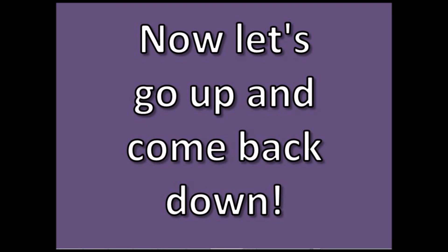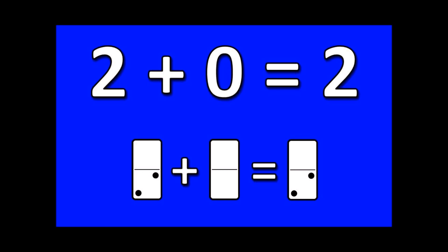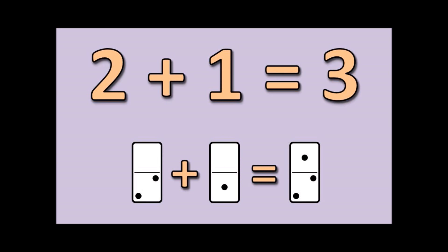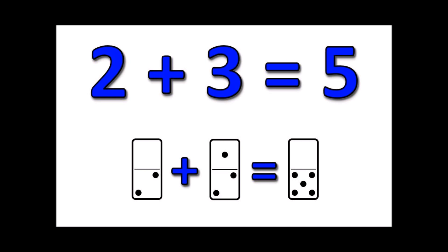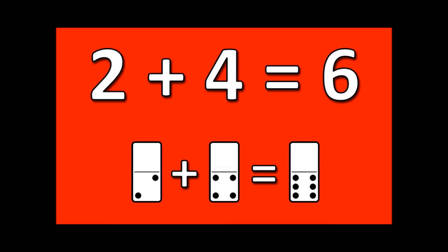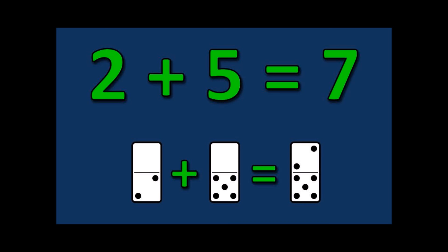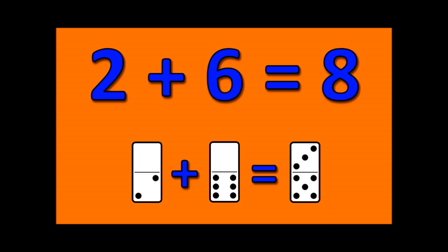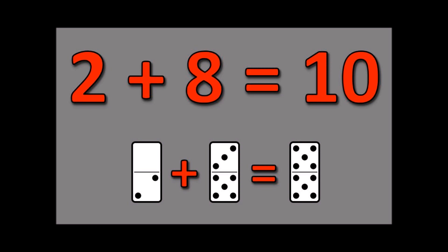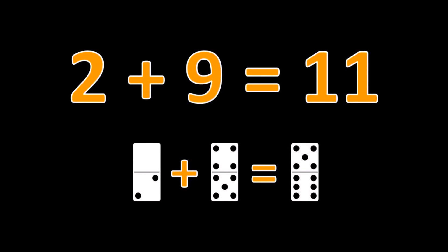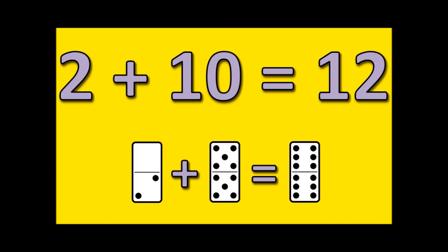Now let's go up and come back down. Two plus zero is two. Two plus one is three. Two plus two is four. Two plus three is five. Two plus four is six. Two plus five is seven. Two plus six is eight. Two plus seven is nine. Two plus eight is ten. Two plus nine is eleven. Two plus ten is twelve.